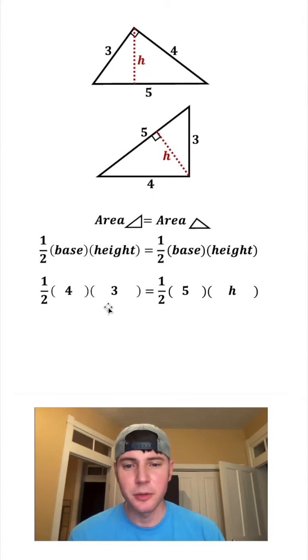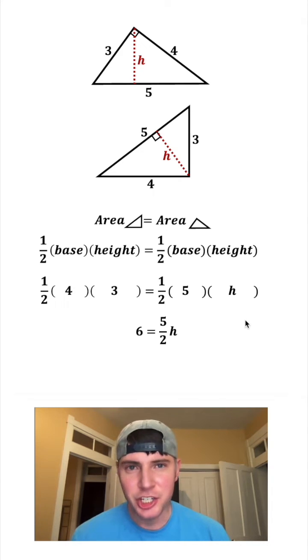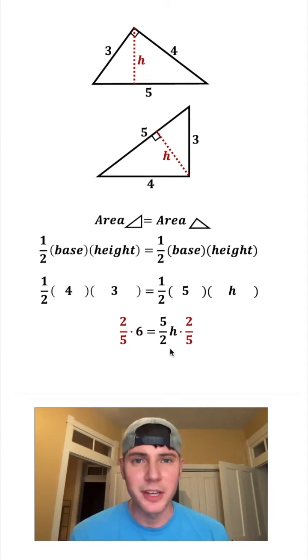One-half times 4 is equal to 2, times 3 is equal to 6. And then one-half times 5 is five-halves, and that's going to be multiplied by this h. I want to get this h alone on this side, so I'm going to multiply both sides of the equation by the reciprocal of five-halves, which is two-fifths.